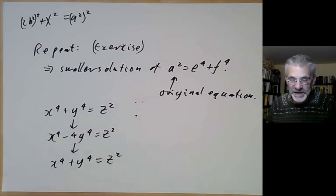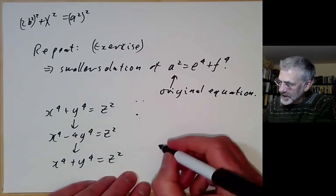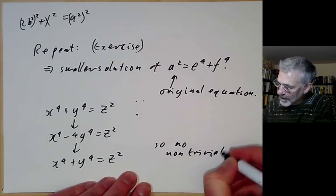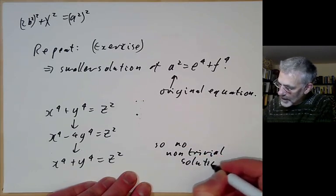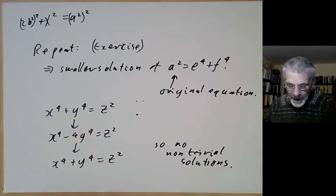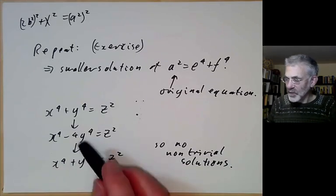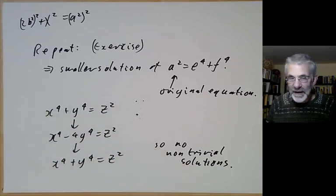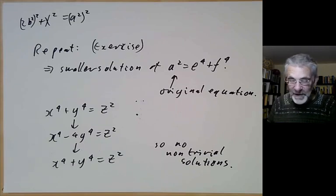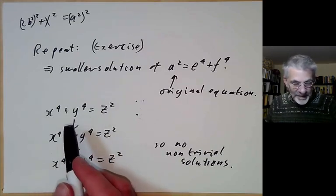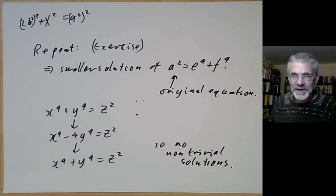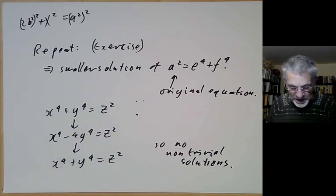The reason Fermat's method works turns out to be that this is something called an elliptic curve, and you can apply similar methods whenever you've got an elliptic curve. This is one of the reasons why elliptic curves are so much easier to deal with than other sorts of curves.